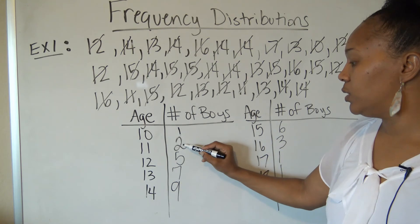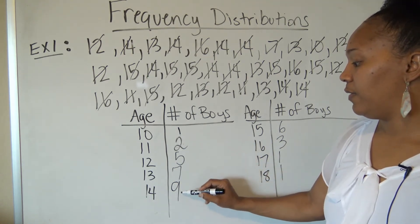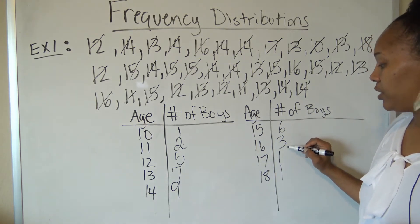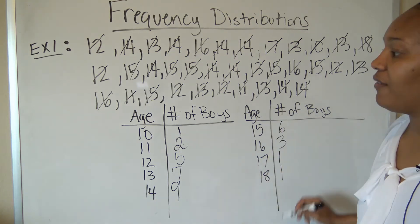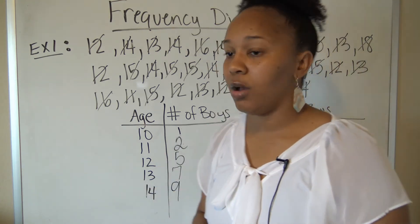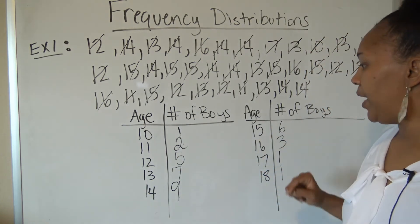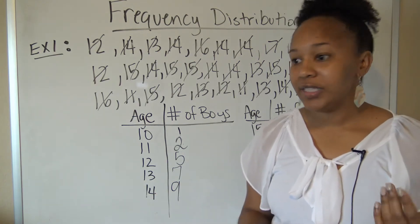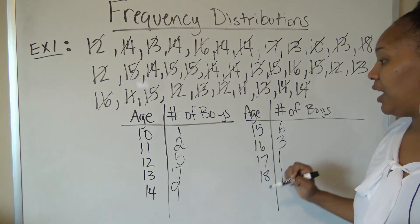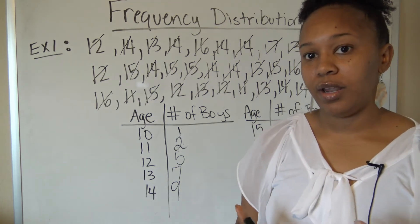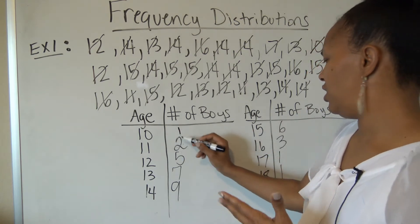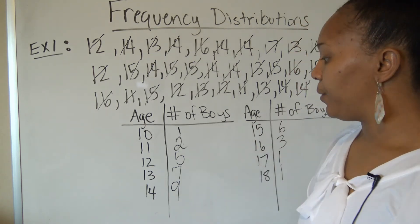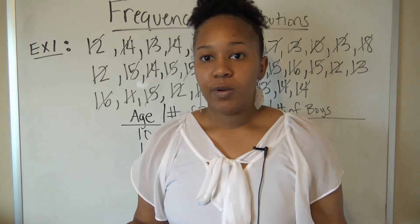Now to verify the total: 1 + 2 = 3, plus 5 = 8, plus 7 = 15, plus 9 = 24, plus 6 = 30, plus 3 = 33, 34, 35. There were 35 boys — which matches what I said at the beginning. You can also see that ages 10, 17, and 18 each had only 1 boy, meaning very few boys hit their growth spurt that early or that late. That's how you create a frequency distribution.